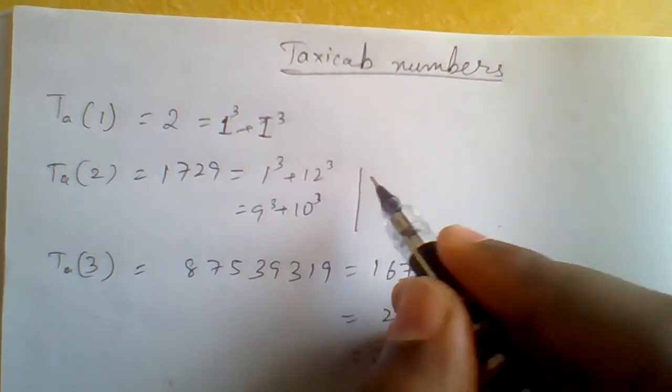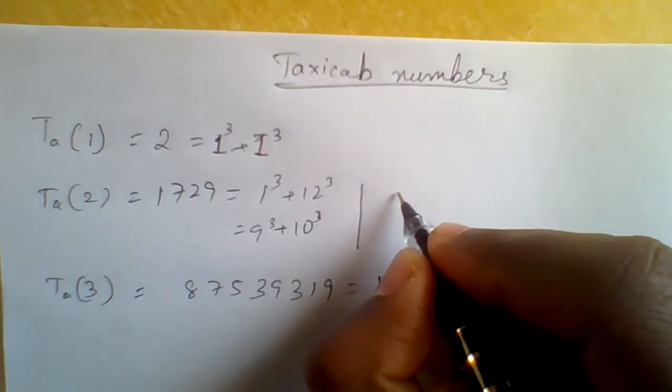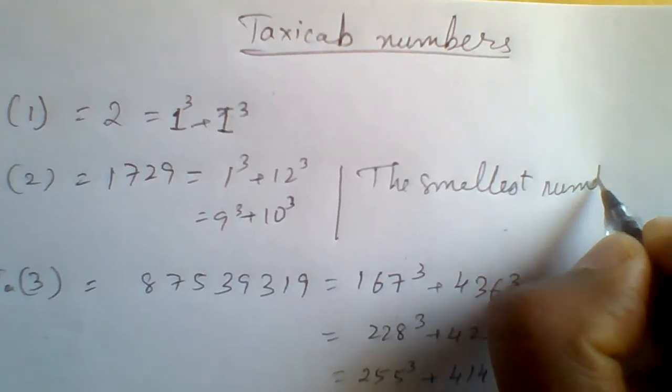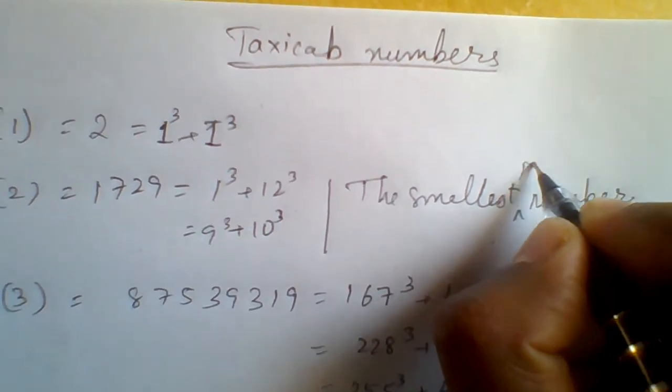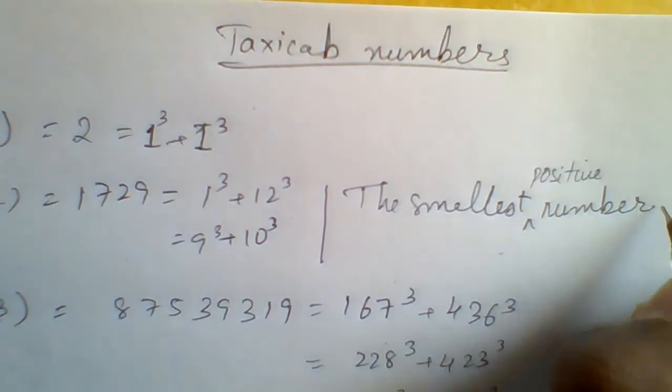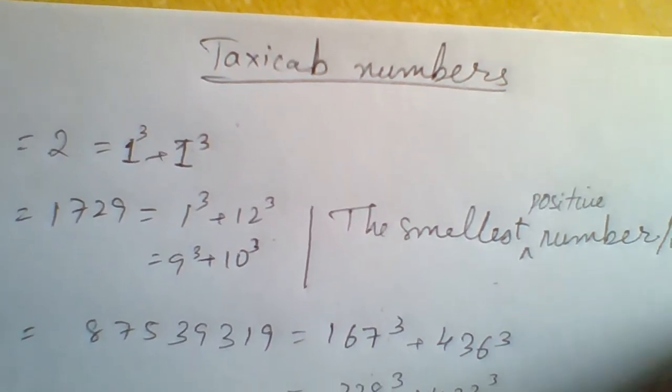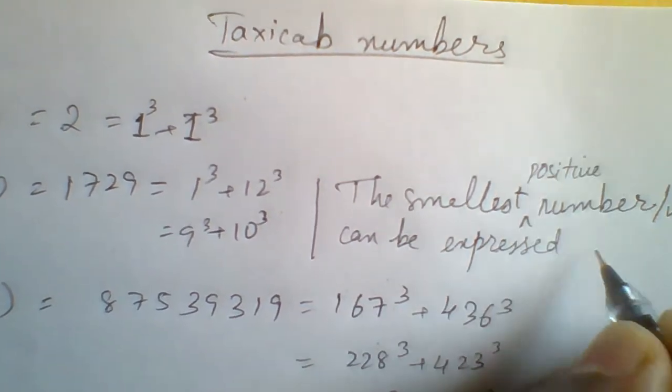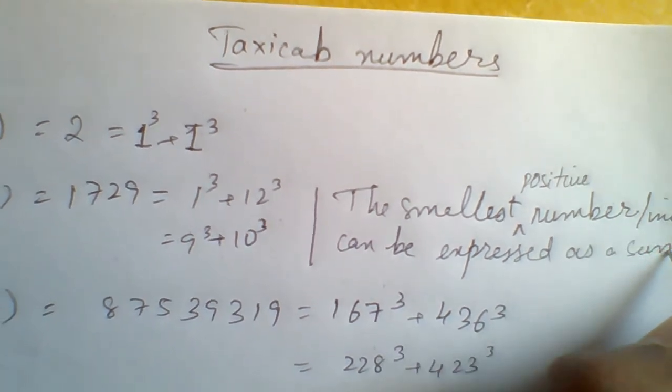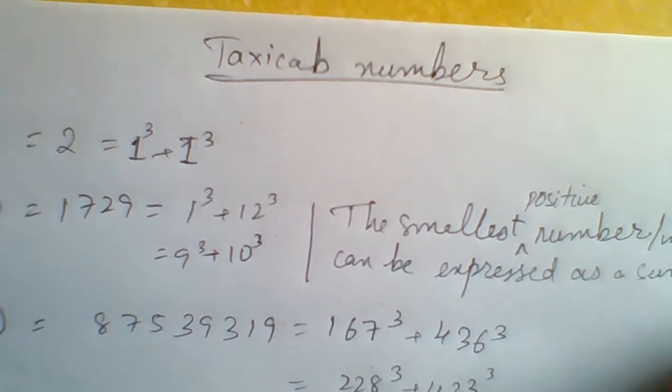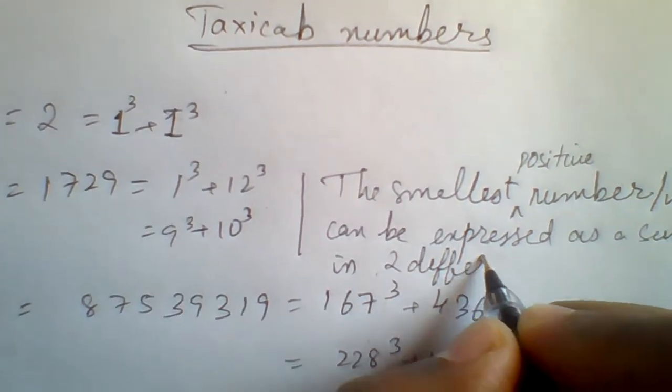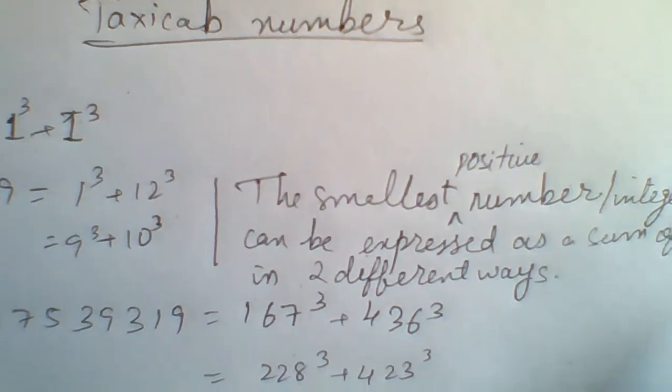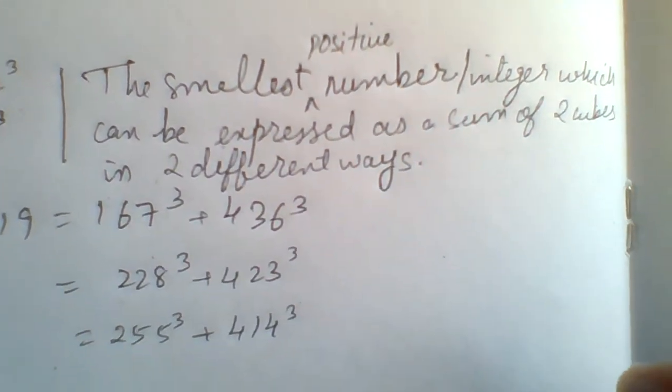According to Ramanujan, it is the smallest number, or maybe better if we write positive number or integer, which can be expressed as a sum of two cubes in two different ways. But here Ramanujan forgot to mention one thing.